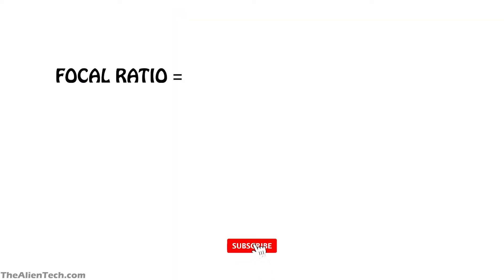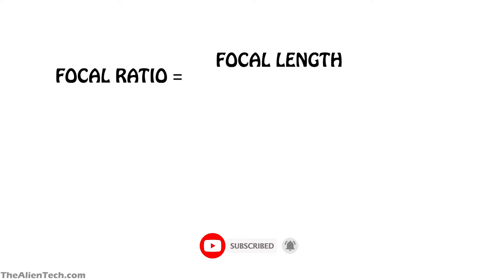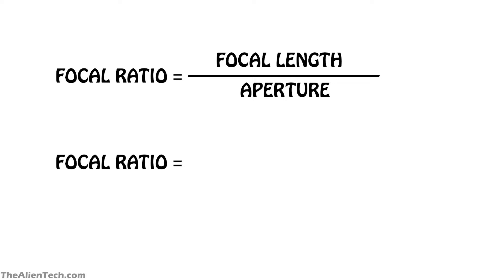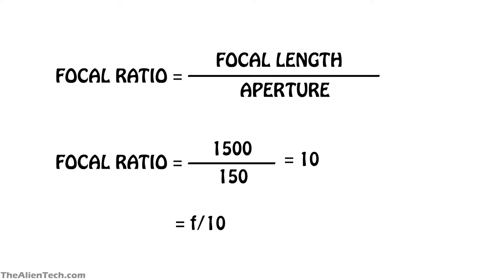A simple formula for focal ratio is the focal length divided by the aperture of the telescope. If you have a telescope that has an aperture of 150 mm and its focal length is 1,500 mm, then its focal ratio is 10. It is written like this: f/10.